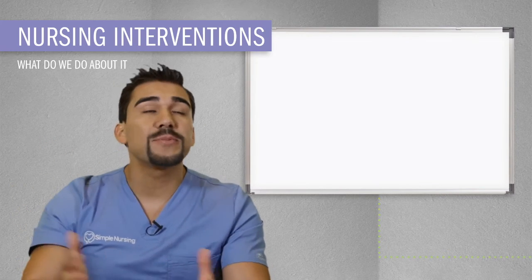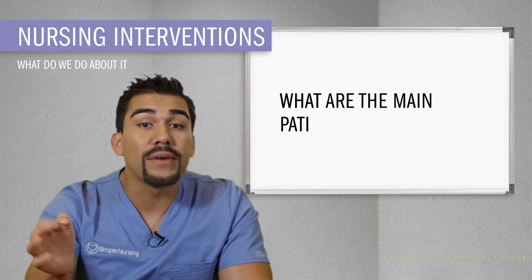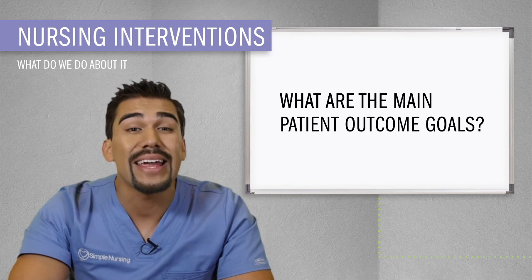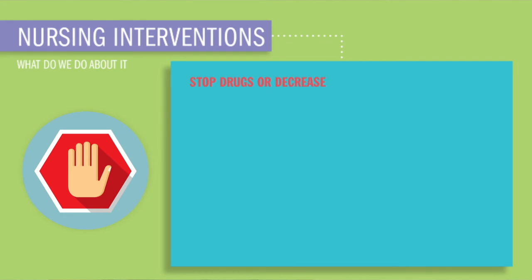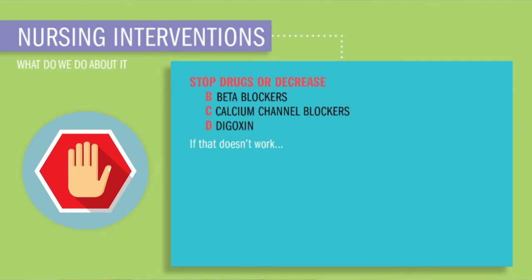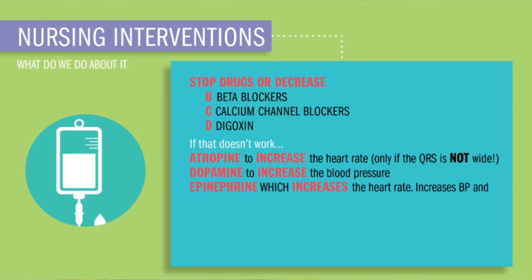So what are we going to do about it? The main goal is to reset and restore that AV node to normal function. First, remove the causes — stop or decrease the dose of drugs slowing the heart rate, like those beta blockers, calcium channel blockers, and digoxin. If that doesn't fix the problem, stimulate the AV node by giving atropine to increase the heart rate, dopamine to increase blood pressure, and epinephrine to increase both heart rate and BP by vasoconstricting — basically squeezing down the blood vessels — which increases cardiac output and oxygen delivery to vital organs like the heart and brain.